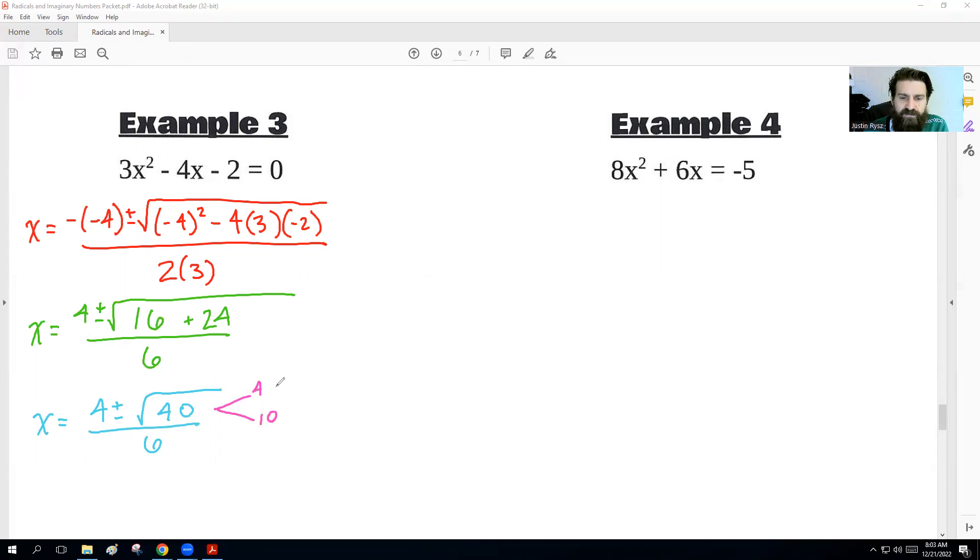All righty. We can add, and we get 4, plus or minus the square root of 16, plus 24 is 40, over 6. We'll break down the 40. 40 is 4 and 10. 2 and 2. 2 and 5. That means we get to break 1, 2 out, and then the 2 and the 5 stay inside. So we get 4, plus or minus 2, radical 10, over 6. We just double-check. Can we divide 4, 2, and 6? Yeah, we can divide them all by 2. So we'd get 2, plus or minus radical 10, over 3.